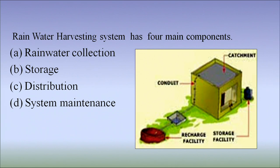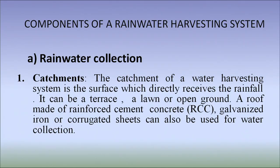The catchment is the first component — rainwater collection is by catchment, and conduits carry the water down for distribution and storage. The catchment of a water harvesting system is a surface which directly receives the rainfall. It can be a terrace, a lawn, open ground or any other permeable surface. A roof made of reinforced cement concrete (RCC), galvanized iron or corrugated sheets can also be used for water collection.